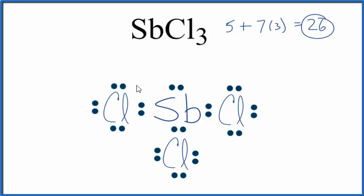If we look at this, each chlorine atom has an octet. And then the Sb, the antimony in the center, that has 8 valence electrons, an octet as well.